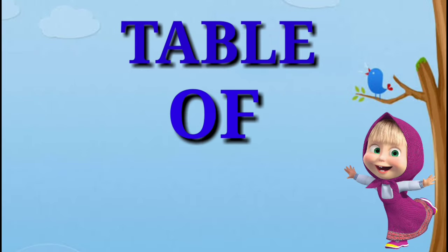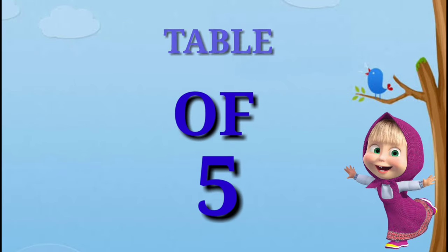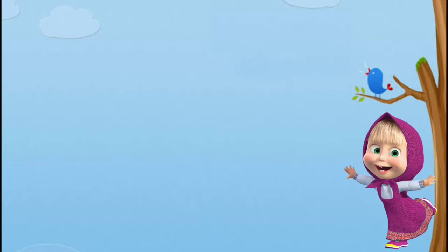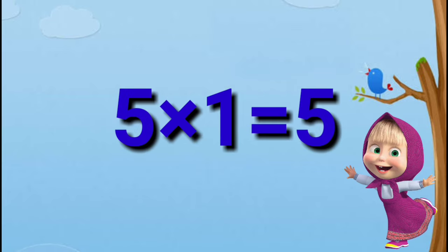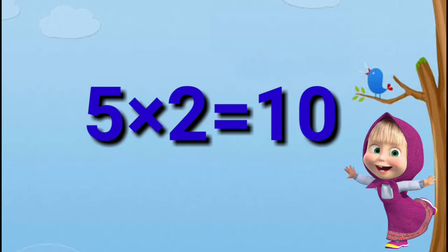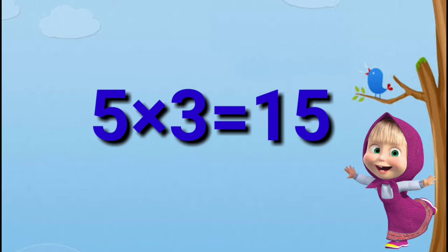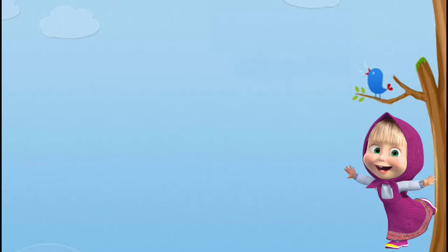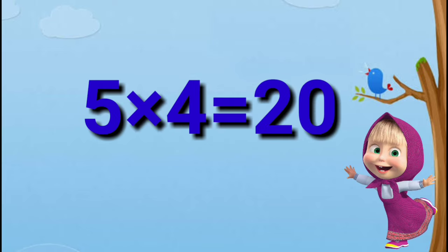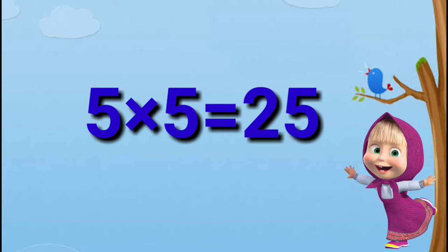Tables of Five. Five ones are five. Five twos are ten. Five threes are fifteen. Five fours are twenty. Five fives are twenty-five.